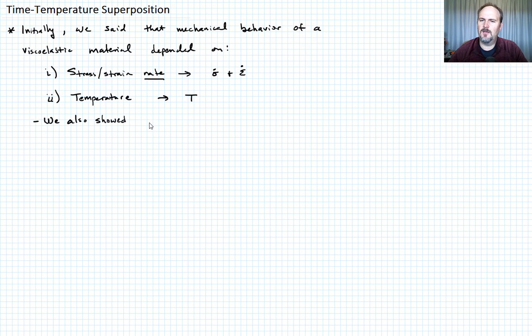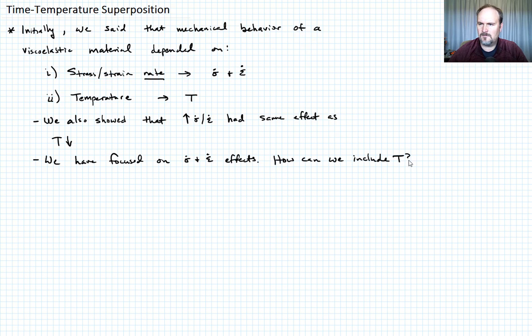So what else did we show at that initial discussion of viscoelasticity? We also showed that an increasing strain rate or stress rate had the same effect as decreasing the temperature. So we might think that there's some way we could do some scaling so that we can characterize at a single temperature and then maybe adapt that characterization on the basis of temperature. The question is, we've focused on stress rate and strain rate effects. How can we include temperature?